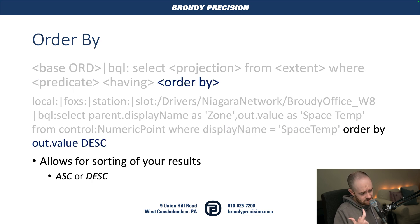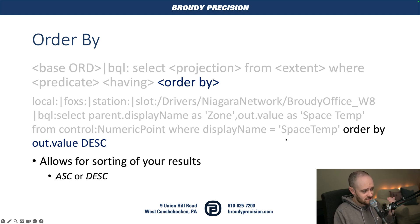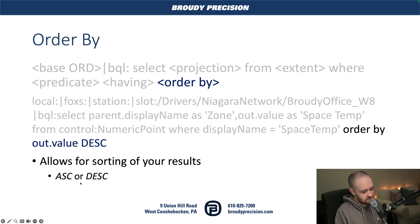Our last piece is the ability to order our results. We can order based on pretty much anything we want. In this example, I'm ordering based on the out dot value of our space temp and doing a descending order. We can do ascending or descending — those are the keywords you want to use for ordering.